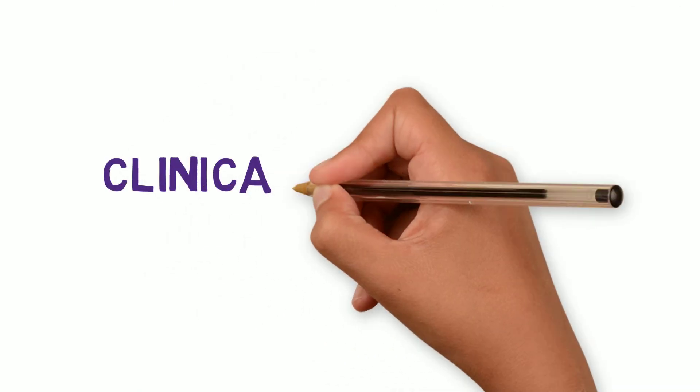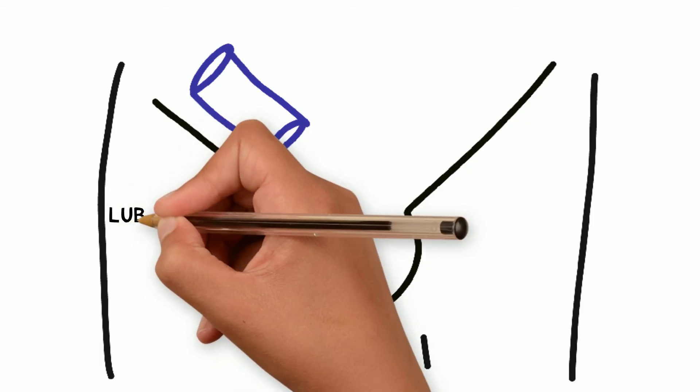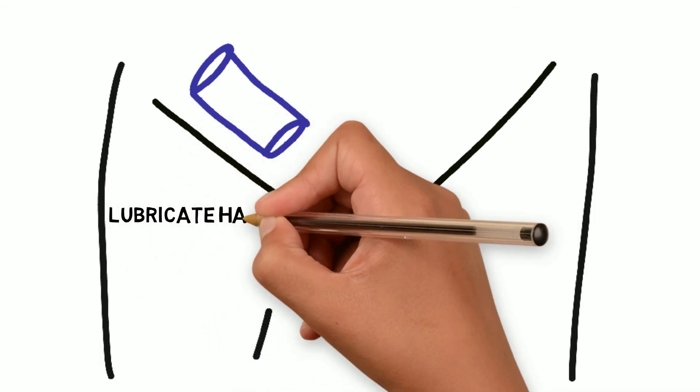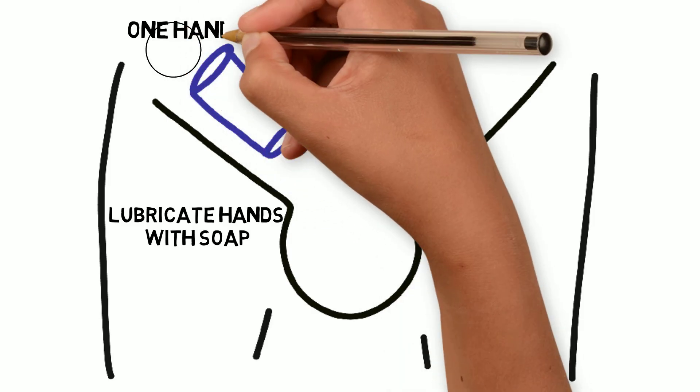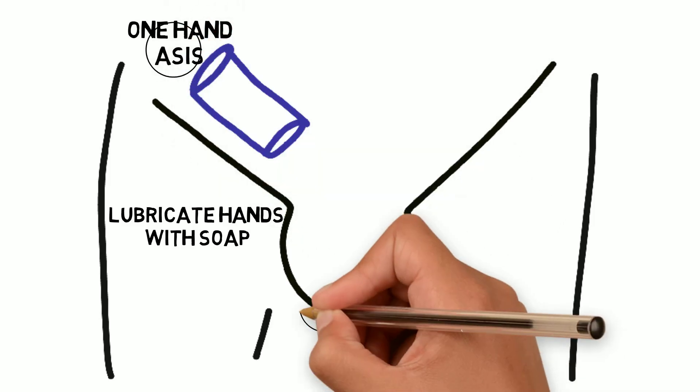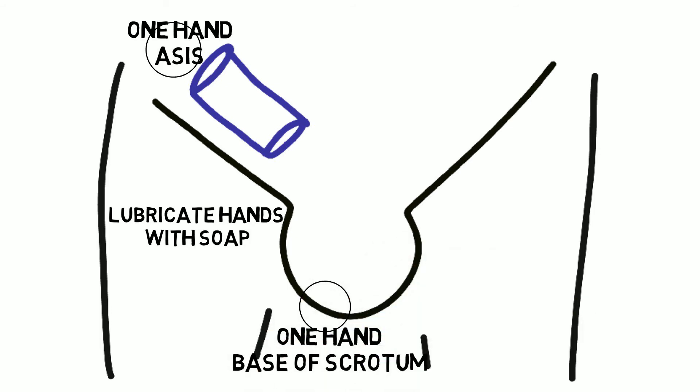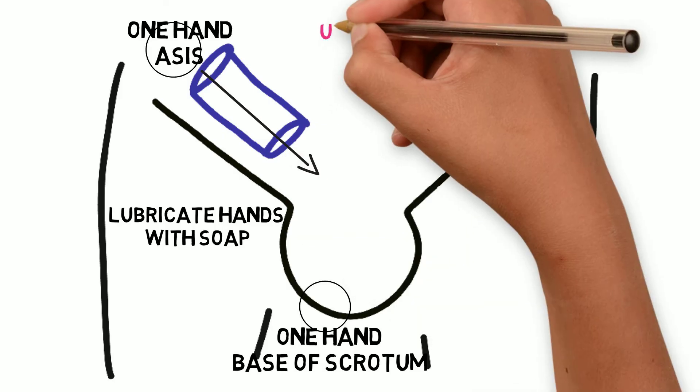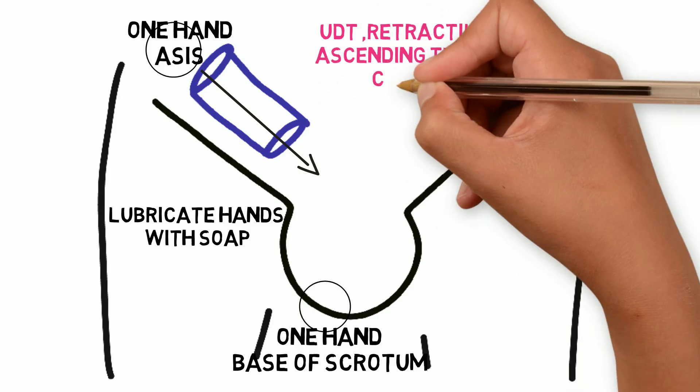How to diagnose? Mainly by clinical examination. First, lubricate the hands with soap, then keep one hand over the anterior superior iliac spine and the other hand at the base of the scrotum giving some traction. With the first hand, sweep down the inguinal canal. With that, we can diagnose undescended testis, retractile testis, and ascending testis.